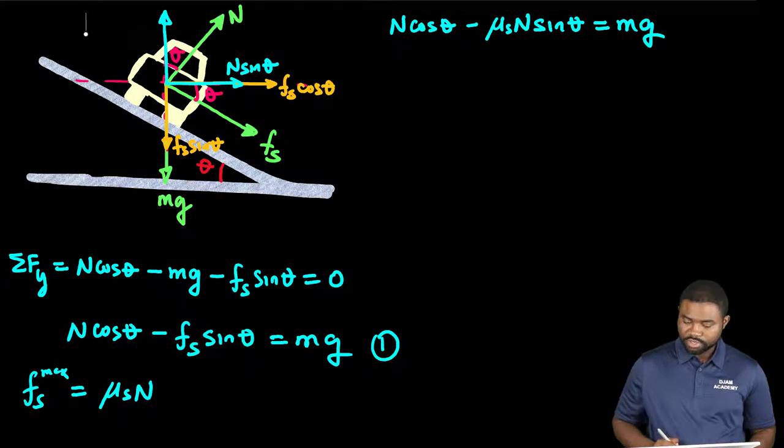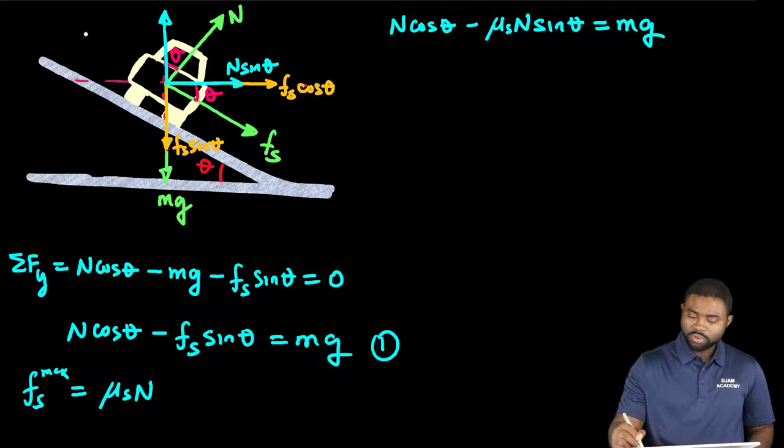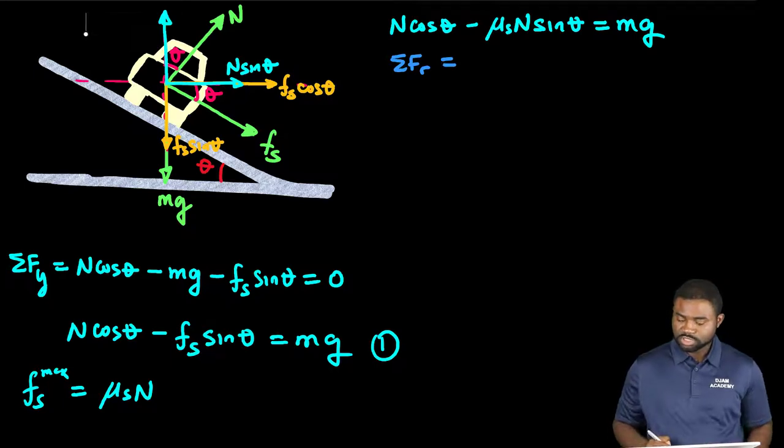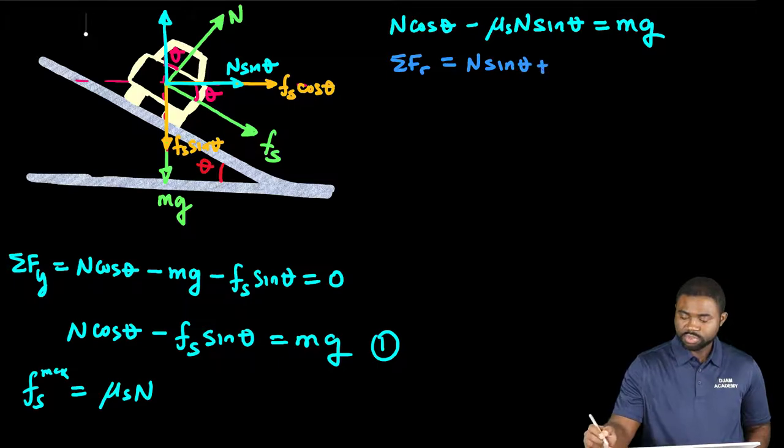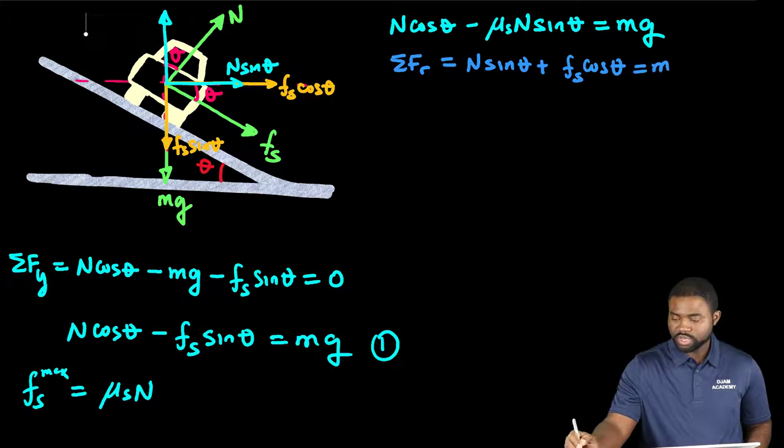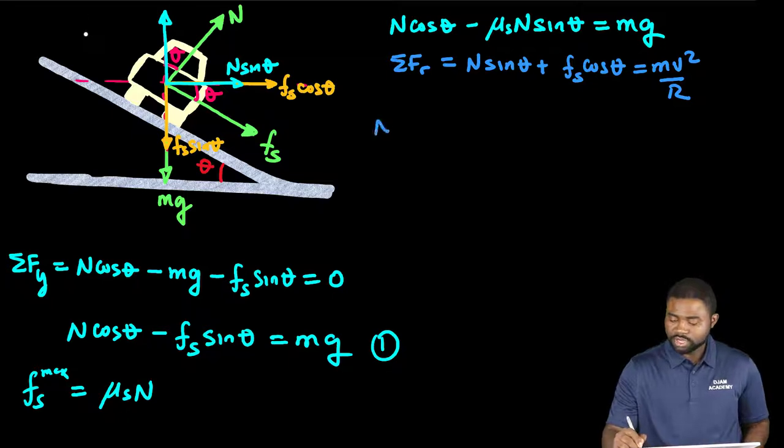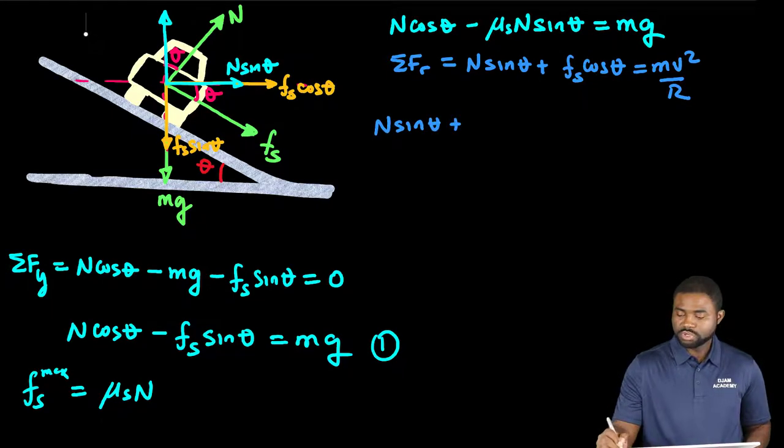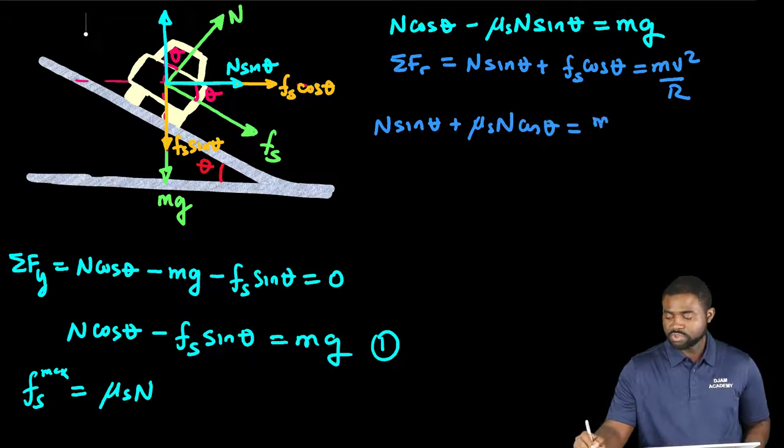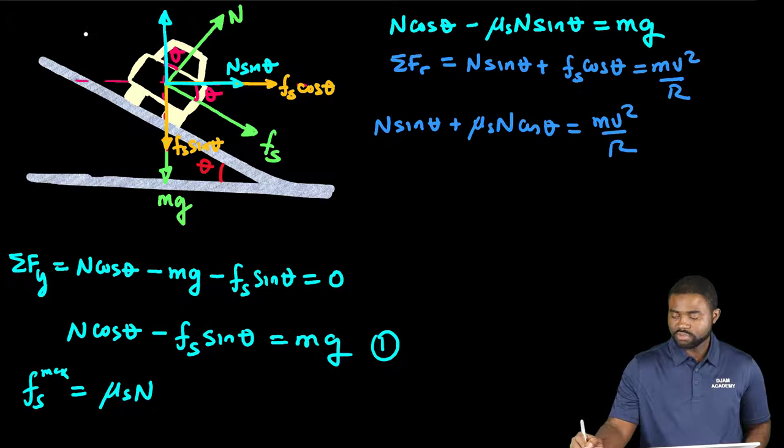The sum of forces towards the center of the circle will be N sine theta plus Fs cosine theta equal to m v squared all divided by R. That means N sine theta plus mu_s N cosine theta is equal to m v squared all divided by R.